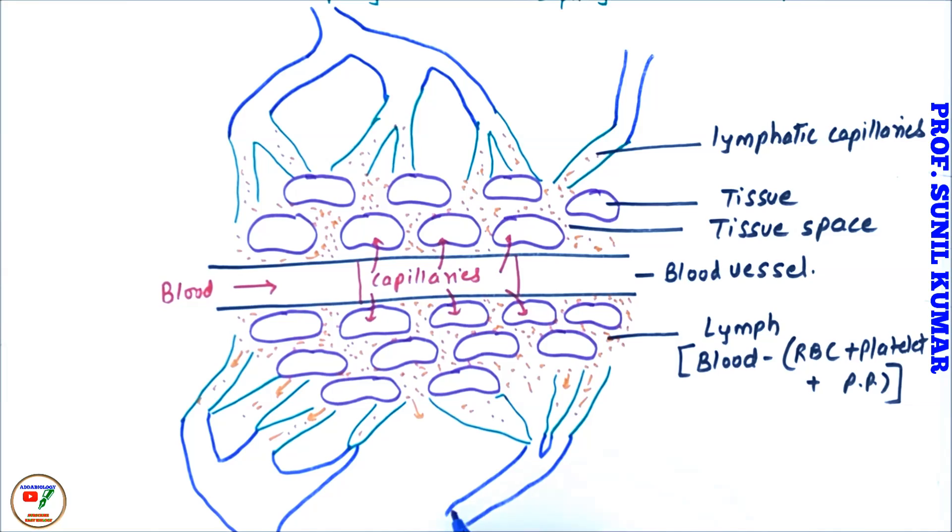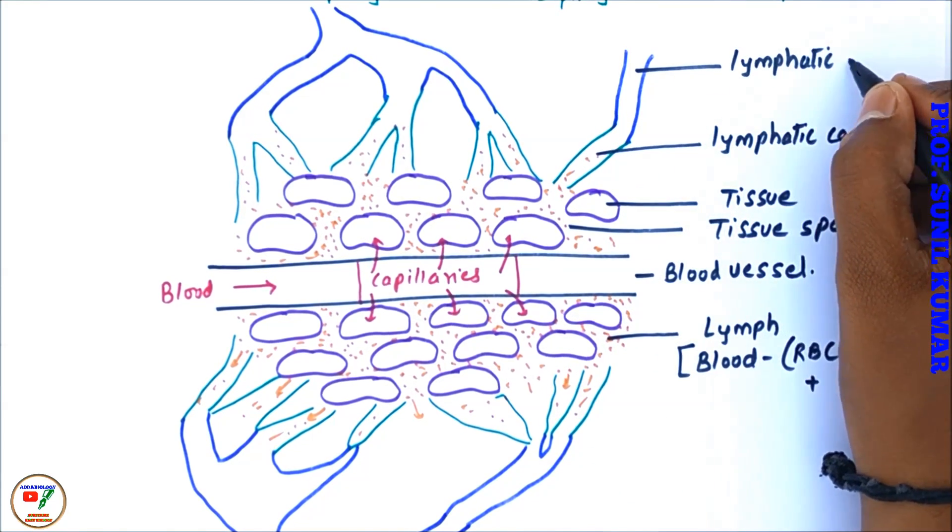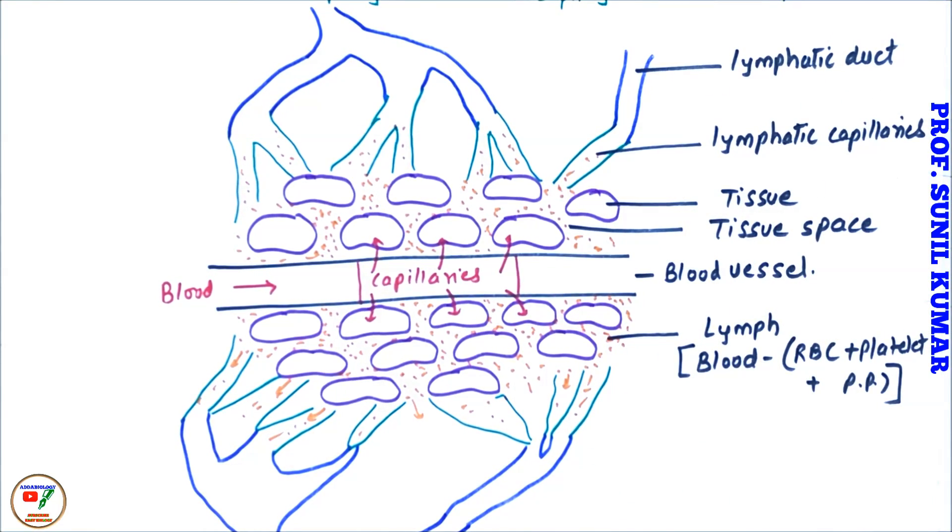In the duct what will be present? So we can say they have lymph nodes, one of the most important part. It plays a very important role in screening the lymph or the fluid. So let us understand the lymph node first.